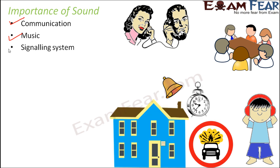Another importance of sound is in signalling systems. For example, think of the alarm clock which wakes you up every morning. You set it for 6 o'clock and every day at that time the alarm clock produces a very unique sound, and because of that sound you wake up. Sound is used not only in alarm clocks but also in fire alarms and in school bells, which signal the end of one period and the beginning of the next.